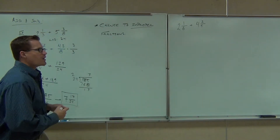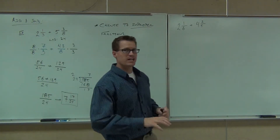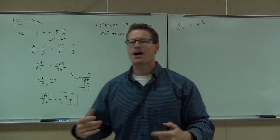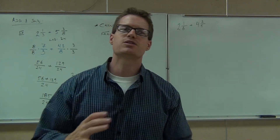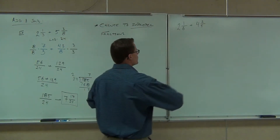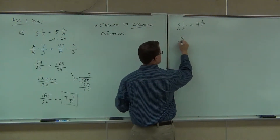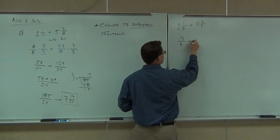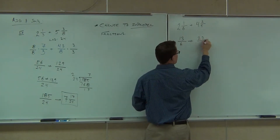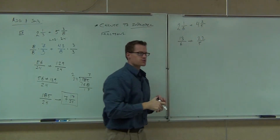Now we're back to this problem. The first thing that we're going to do is we're going to change any mixed number into an improper fraction. That way we can use the things we already know how to do in this section. So we're going to change that to 13 over 6, and we're going to change this to 22 over 5.